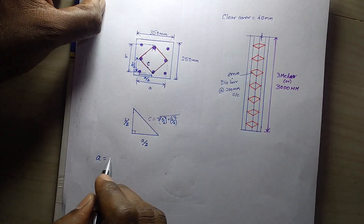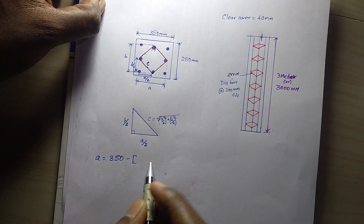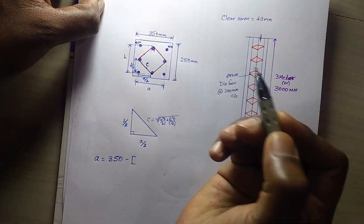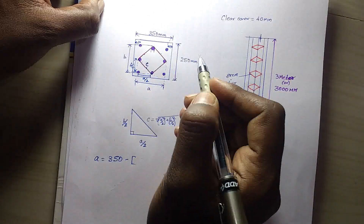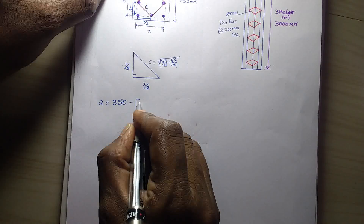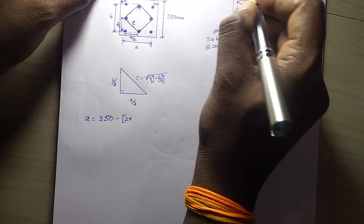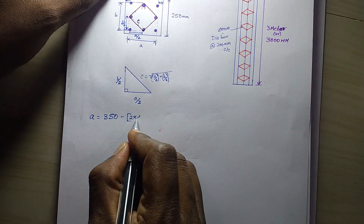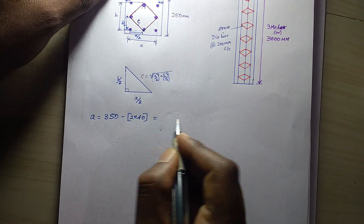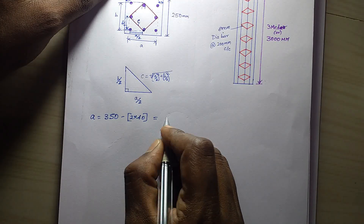Total width is 350mm. Minus 2 cover — 2 sides of the cover. Here is the cover and the cover. 2 cover we will minus. The cover is 40mm. So 350 minus cover 40mm — if we do minus, the answer is 270mm.